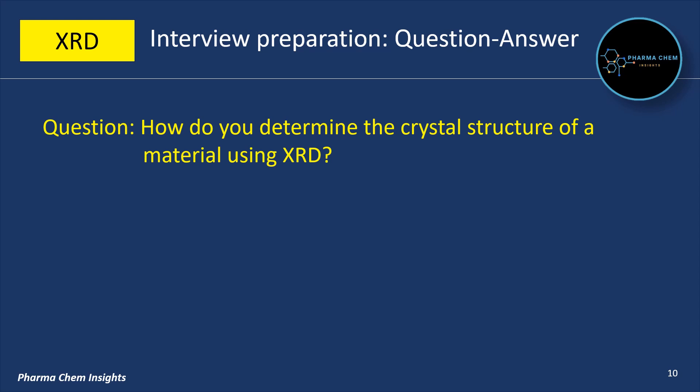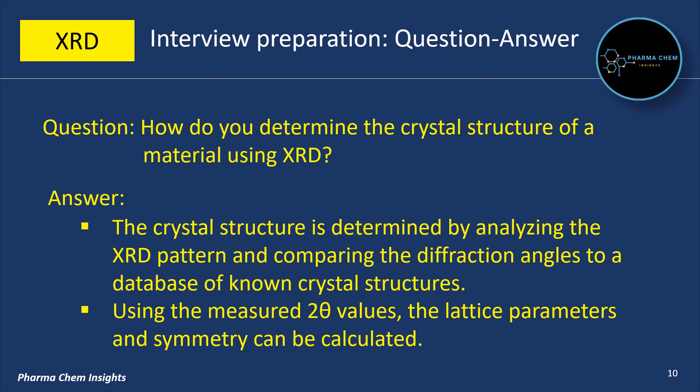Next question: how do you determine the crystal structure of a material using XRD? The crystal structure is determined by analyzing the XRD pattern and comparing the diffraction angles to a database of known crystal structures. Using the measured 2-theta values, the lattice parameters and symmetry can be calculated.